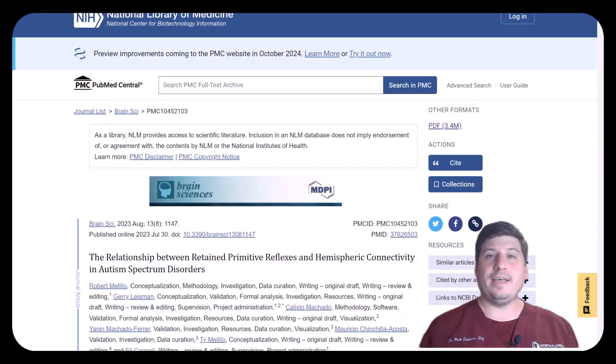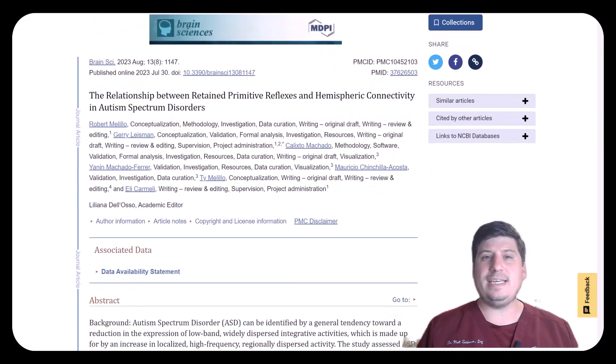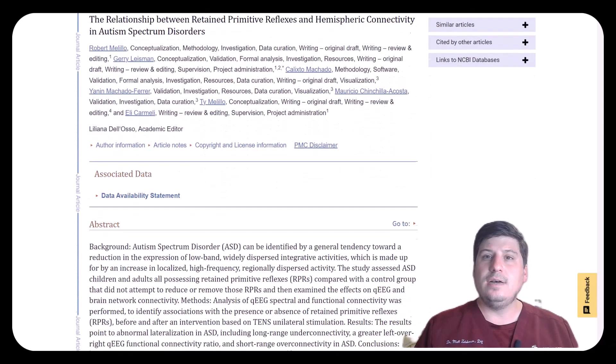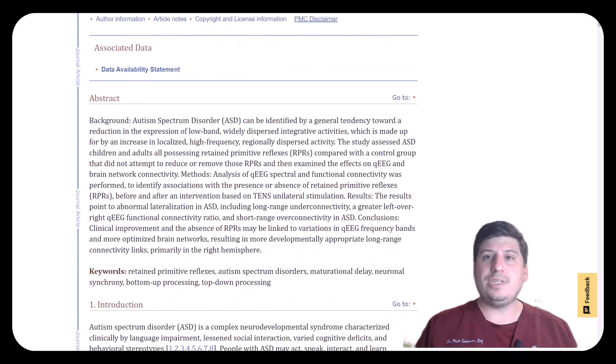Let's look at our first study that looks at the relationship between retained primitive reflexes and hemispheric connectivity or imbalance in autism spectrum disorder. This study used quantitative EEG or QEEG, which measures brain waves, which in this study, like previous studies, demonstrated consistent differences in brain wave frequency and connectivity in autism as compared to neurotypical controls.